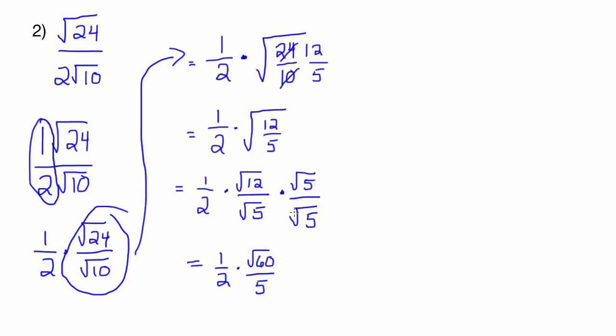So then I'm going to show you that this ends up being we can multiply across. So 1 times the √60 is just √60. And then 2 times 5 is 10. Then I want to simplify out the √60. So that can be rewritten as 2√15. And then that's over 10.